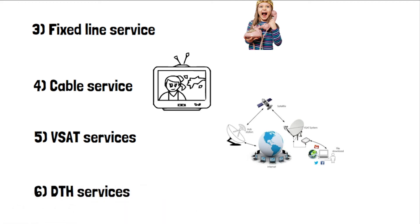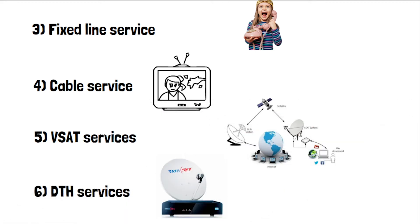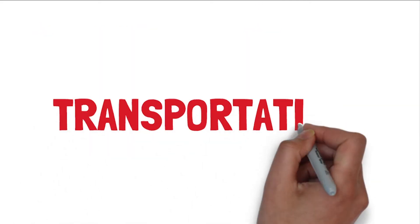DTH services are a satellite-based media service provided by cellular communication. With the help of a small antenna and a set-top box, you can watch television through that service.